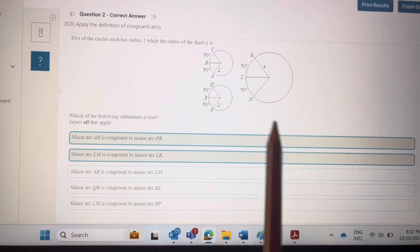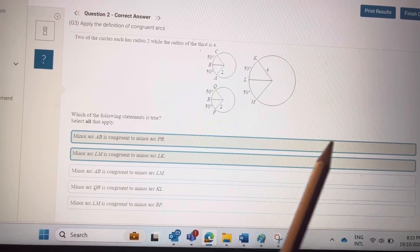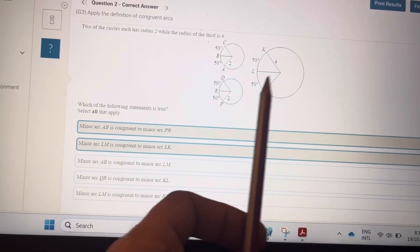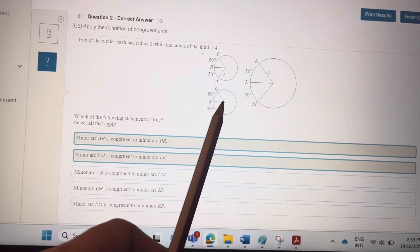So AB in this circle is not congruent to LM, and QR here is not congruent to KL here, and LM is not congruent to TR.